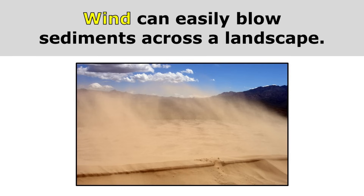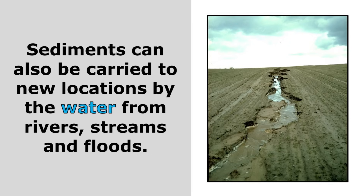Wind can easily blow sediments across a landscape, and that's very common in the desert. Strong winds are very easily able to carry those grains of sand from one place to another. Sediments can also be carried to new locations by the water from rivers, streams, and floods. You can see that water is causing the erosion of this soil, carrying it away from here to another place — the water is eroding the soil.